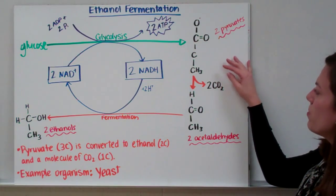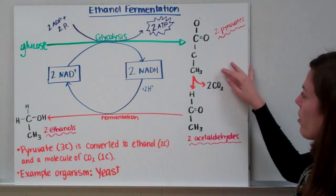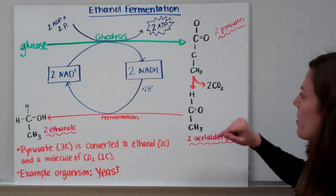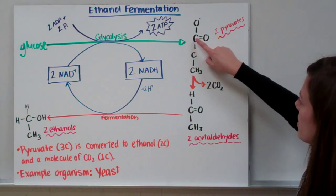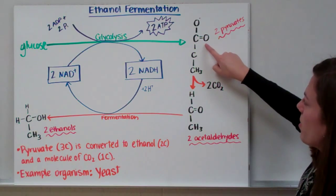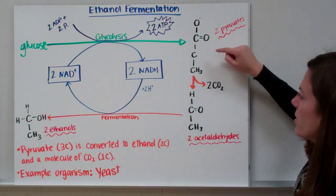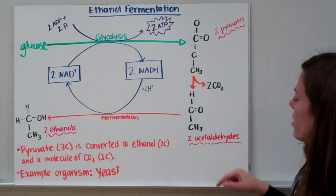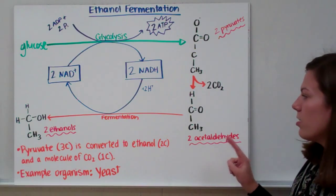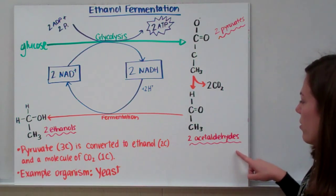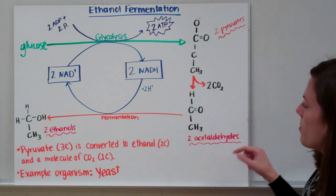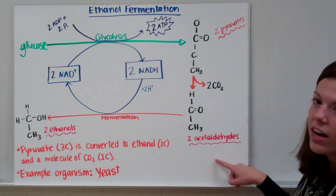In that process, we're taking our two pyruvates and removing a single carbon compound, carbon dioxide. So carbon dioxide is this C bonded to an O and double bonded to another O, bonded to two oxygens. So we're going to remove this portion of our pyruvate and we're going to turn it into a two-carbon compound acetaldehyde. So we're taking our two pyruvates, removing carbon dioxide, and we're left with two acetaldehyde.